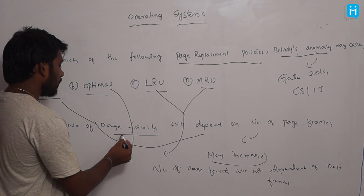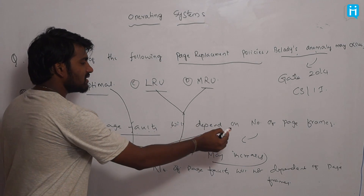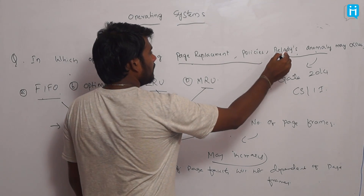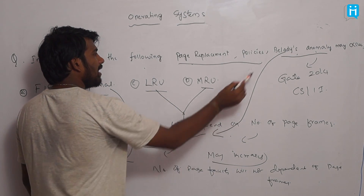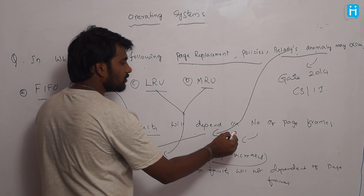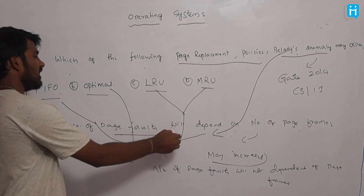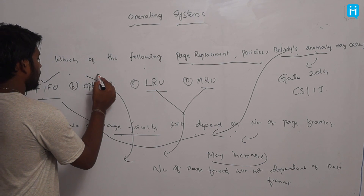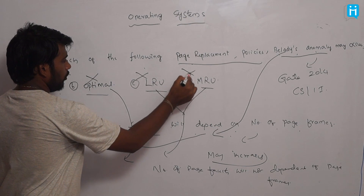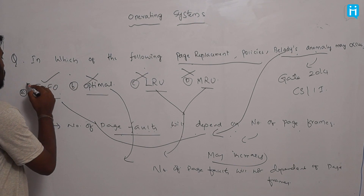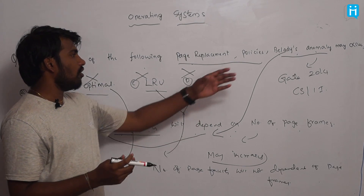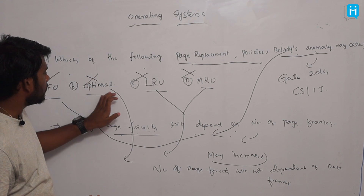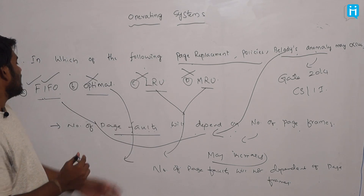In First In First Out page replacement, Belady's anomaly states that the number of page faults will increase as the number of page frames increases. In which of the following page replacement policies may Belady's anomaly occur? Belady's anomaly — where page faults increase as page frames increase — is present in First In First Out. It is absent in Optimal, LRU, and MRU. So the answer is First In First Out.